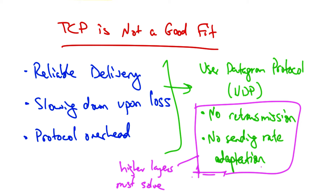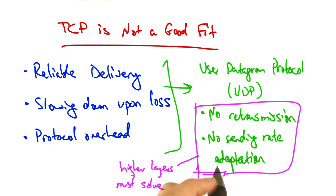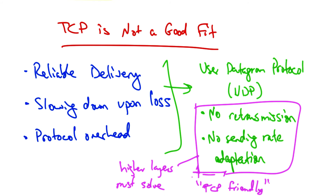In particular, the sending rate still needs to be friendly or fair to other TCP senders which may be sharing the link. There are a variety of video streaming and audio streaming transport protocols that are built on top of UDP that allow senders to figure out when and how to retransmit lost packets and how to adjust sending rates.